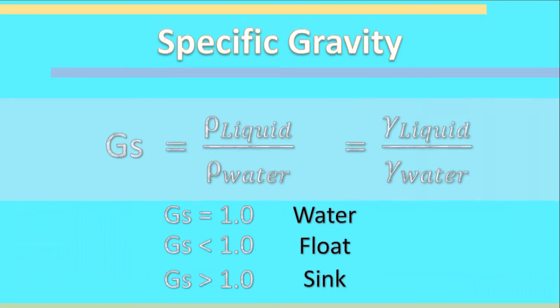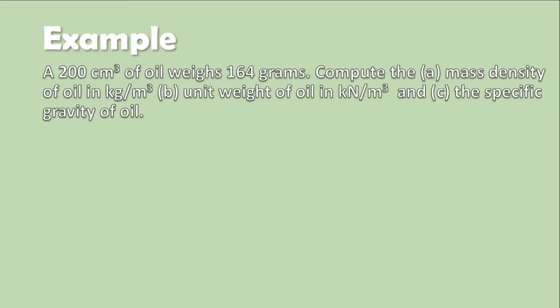Let's try to solve an example. Problem 1: A 200 cubic centimeter sample of oil weighs 164 grams. Compute: (A) the mass density of oil in kilogram per cubic meter, (B) the unit weight of oil in kilonewton per cubic meter, and (C) the specific gravity of oil.